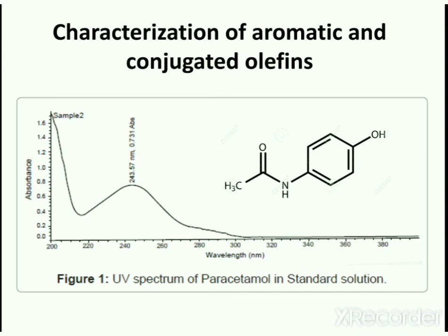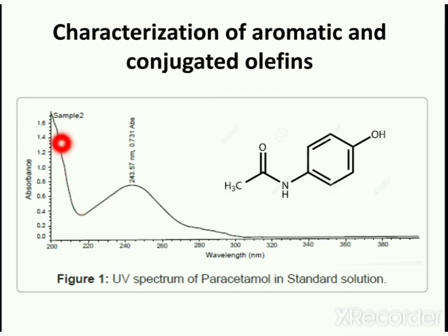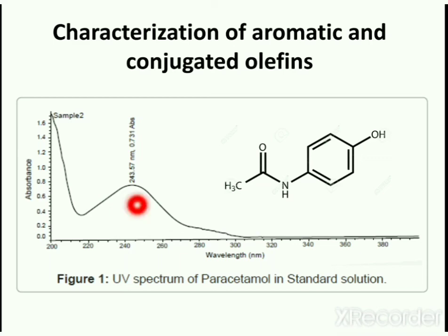This is an example of characterization of aromatic and conjugated olefins by ultraviolet spectroscopy. Here you can see the structure of paracetamol and its ultraviolet spectrum, which is a standard spectra. The ultraviolet spectrum contains two parameters: absorbance and wavelength. The unit of wavelength is nanometer, denoted by lambda. In this picture, you can see a high intensity peak at 243.57 nanometers.